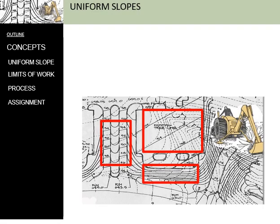Today we're going to talk about four different ideas: uniform slope, limits of work, and in the second lecture we're going to talk about the process you're going to use and your assignment.